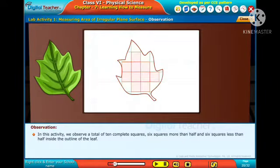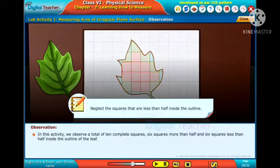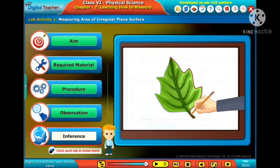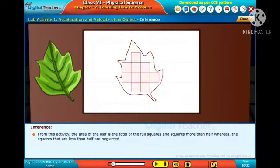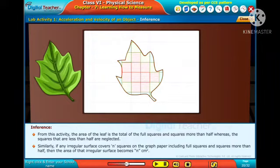In this activity we observe a total of 10 complete squares, 6 squares more than half, and 6 squares less than half inside the outline of the leaf. Note: neglect the squares that are less than half inside the outline. From this activity, the area of the leaf is the total of the full squares and squares more than half. Similarly, if any irregular surface covers N squares on the graph paper including full squares and squares more than half, then the area of that irregular surface becomes N square centimeters.